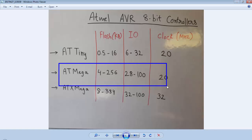The next category under 8-bit AVR microcontrollers is ATMEGA and these microcontrollers are available with 4 to 256 KB of flash memory with minimum of 28 to maximum 100 pins and the clock frequency of maximum 20 MHz.